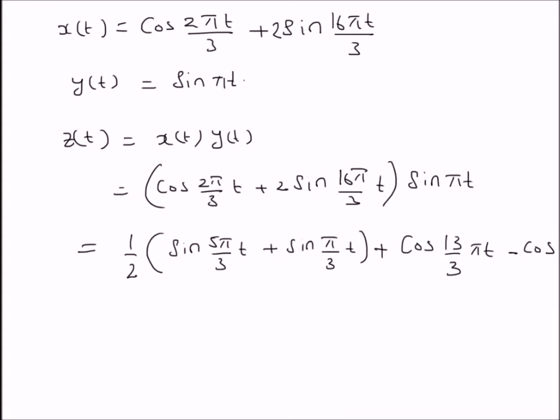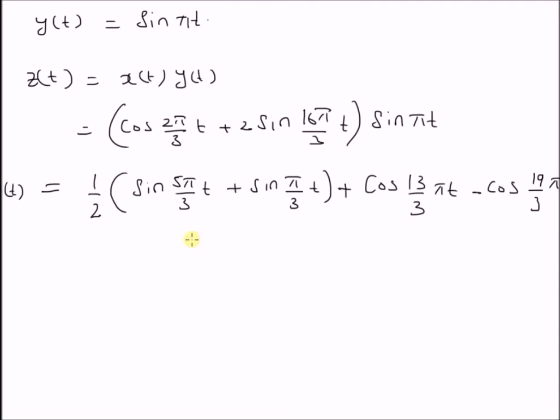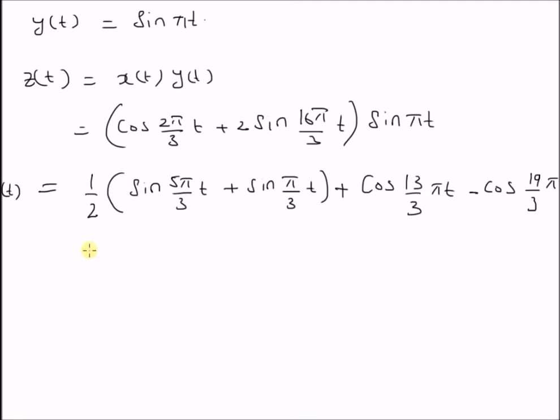So the sum of these 4 sinusoids is the function or the signal z(t). Now, we can compare this summation to the standard Fourier series type summation, which is equal to the sum over k of ak·sin(2πk/T·t), where capital T will be the period of the signal, plus the sum of bl·cos(2πl/T·t), where t is the time.